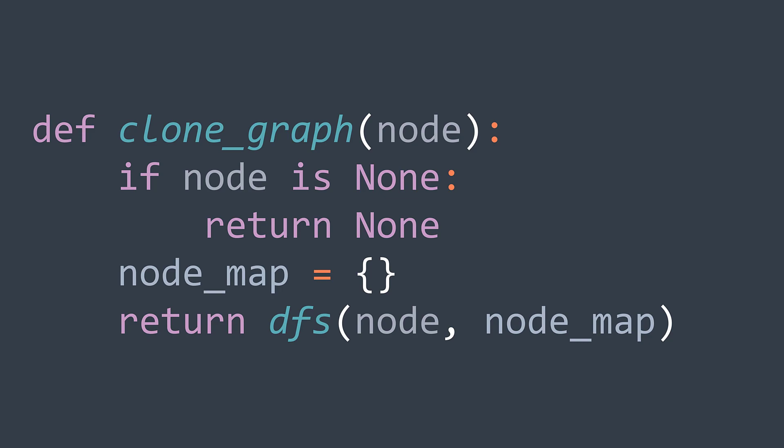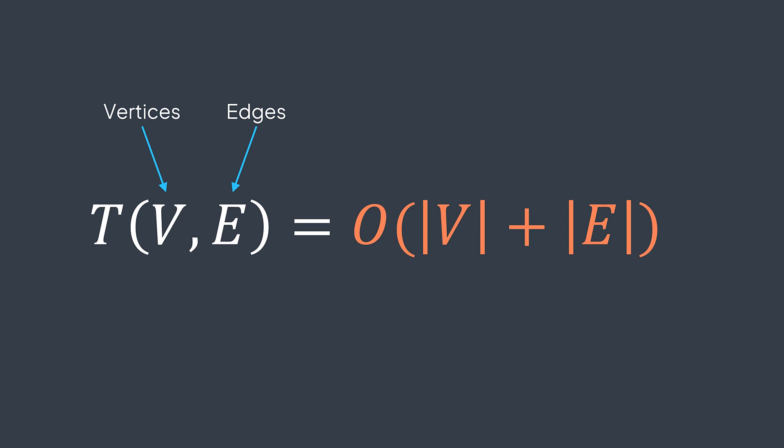For the time complexity, we're just performing depth first search. And the time complexity of depth first search is O(|V| + |E|), where |V| is the number of vertices of the graph and |E| is the number of edges.